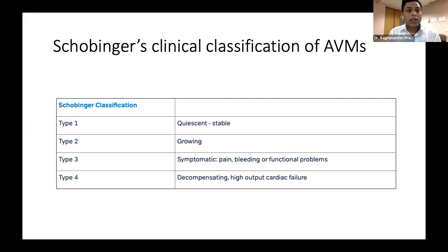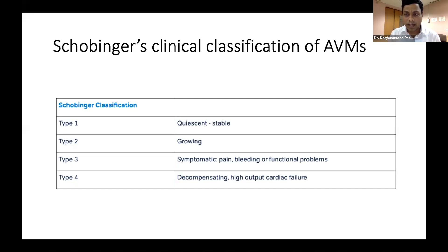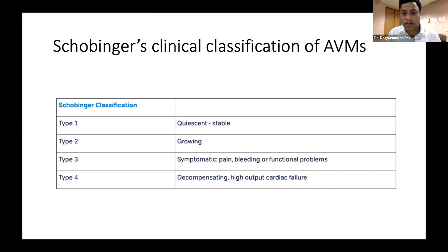The Iscovinger clinical classification is very important for making treatment decisions. There are four types: type 1 and type 2 lesions are generally just followed up, perhaps by radiology or imaging. But type 3 and type 4 lesions definitely require some kind of treatment, as patients generally have severe symptoms like bleeding, ulcers, or severe pain.